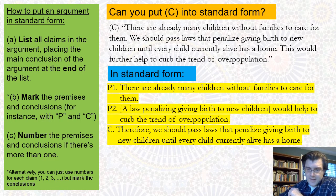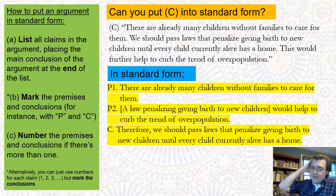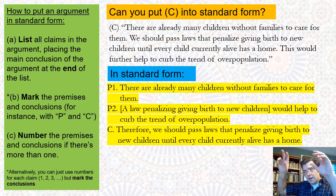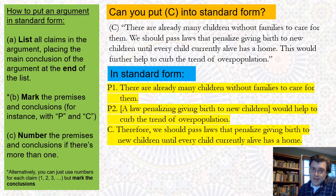I think that this is the best way to summarize the argument in standard form. The first question to ask is: what's the conclusion of the passage? If you can identify the main conclusion that everything else is ultimately intended to provide evidence for, you can put that claim at the bottom and fill in the premises above it. In this case it's pretty clear that the conclusion is 'we should pass laws that penalize giving birth to new children until every child currently alive has a home,' and the two other claims are being offered as evidence for that.